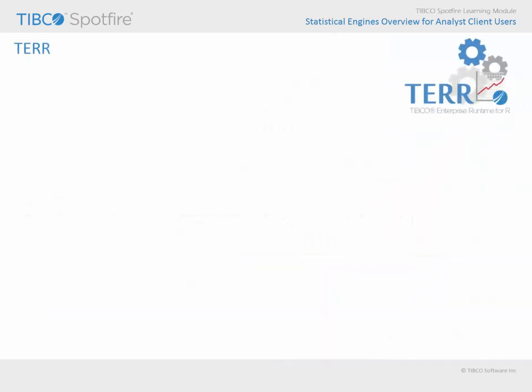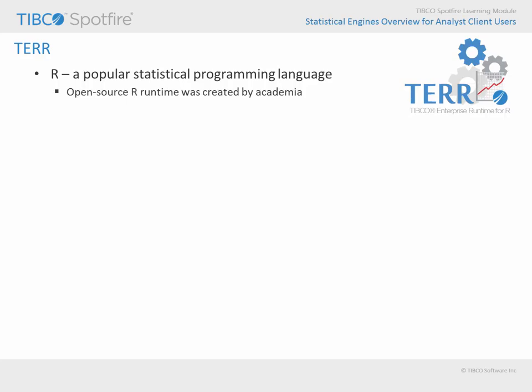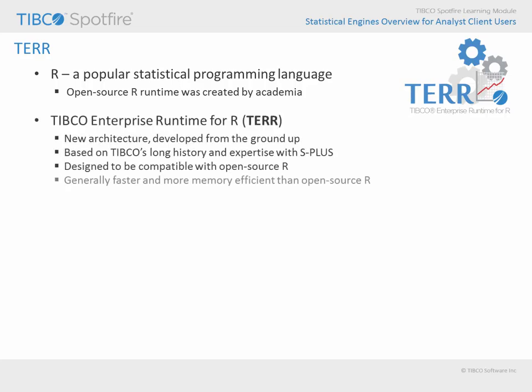Let's begin with an introduction to TEAR. R is a statistical programming language which is broadly applied by data analysts and data scientists toward a wide variety of industry and academic endpoints. However, because this open source tool has its roots in academia and was not intended for high performance production applications, TIBCO designed an enterprise-grade statistical engine to be fully compatible with the R language, which provides a high-performance solution with more robust memory management than open source R.